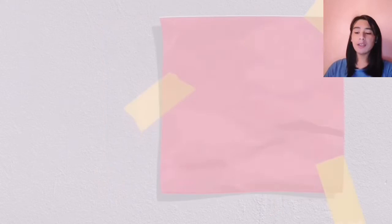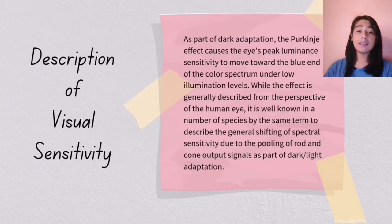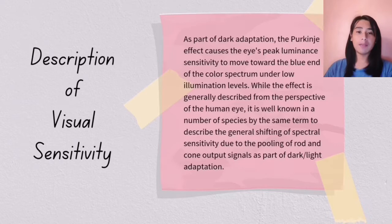As part of dark adaptation, the Purkinje effect causes the eye's peak luminance sensitivity to move toward the blue end of the color spectrum under low illumination levels. While the effect is generally described from the perspective of the human eye, it is well known in a number of species by the same term to describe the general shifting of spectral sensitivity due to the pooling of rod and cone output signals as part of dark and light adaptation.